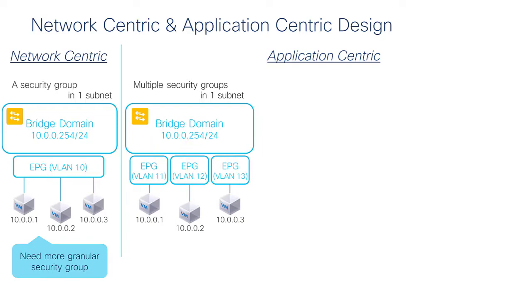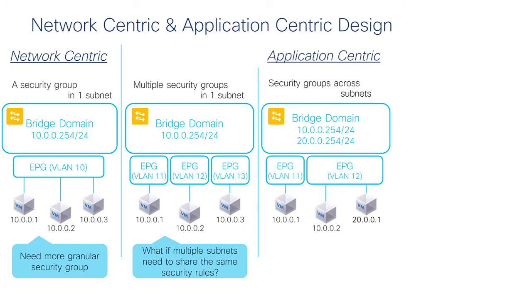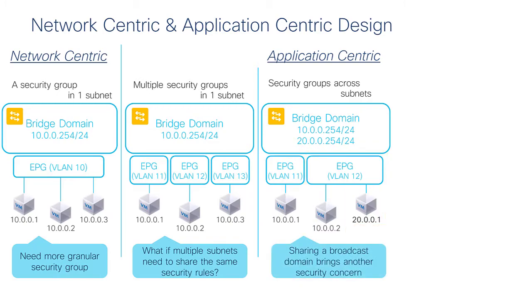ACI has been built to allow for more EPGs in the same bridge domain so that you can create more precise security zones. What if you need servers in different subnets but want them in the same security zone? You can do this by using a single bridge domain, configuring multiple subnets under it, and then configuring EPGs that include endpoints of different subnets.